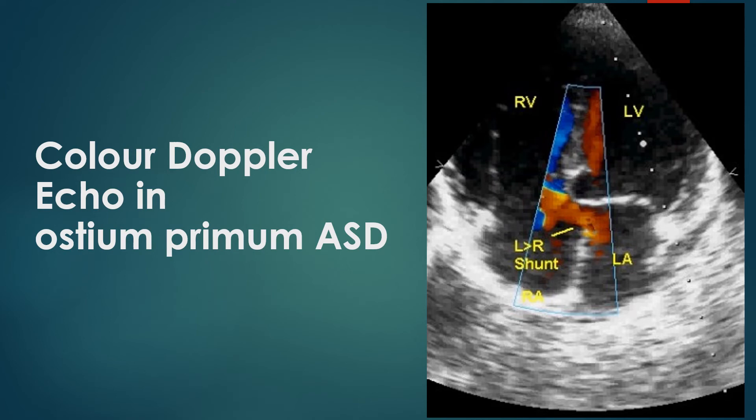Color Doppler echocardiogram showing left-to-right shunt in ostium primum ASD. Though the actual direction of shunt is perpendicular to the beam direction, most of the blood moves from left atrium across the ASD towards the tricuspid valve in a direction parallel to the beam and towards the transducer — that is why the flow is encoded red.